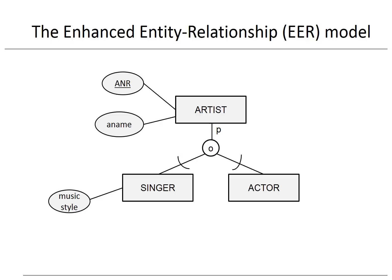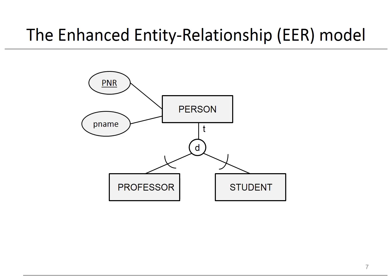Here you can see an example of a partial specialization with overlap. The specialization is partial since not all artists are singers or actors — think about painters, for example. The specialization is overlap since some singers can also be actors. Here you can see an example of a total disjoint specialization. The specialization is total since, according to our model, all people are either students or professors. The specialization is disjoint since a student cannot be a professor at the same time.